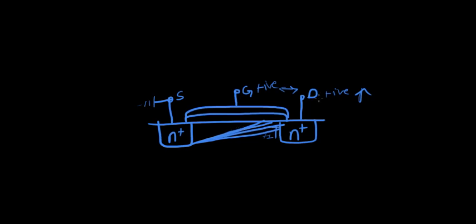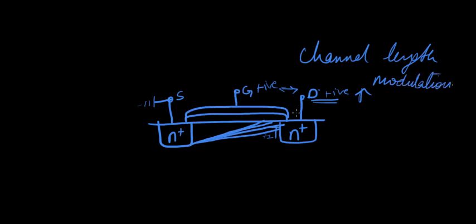This reduction in channel because of the positive voltage on the drain is called channel length modulation. What you have to understand is channel length modulation is because of the changes in the drain voltage. We generally call it VDS because source is anyway grounded. The length of the channel is now a function of VDS. So if you change VDS in your design, you have to understand your channel length is going to modulate. That's all there is to know about channel length modulation. Of course, when we come across problems, you'll understand better. Thank you.